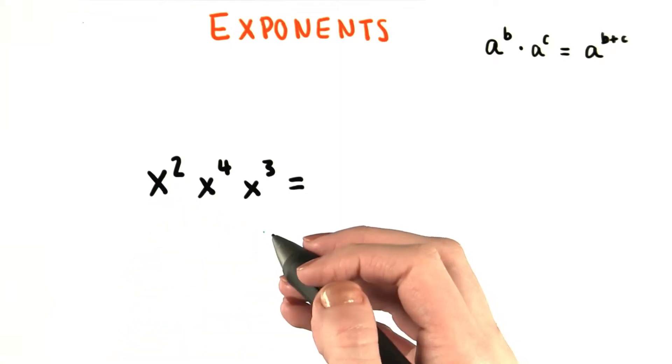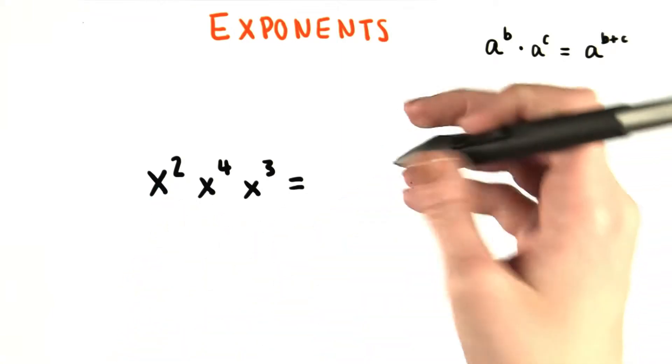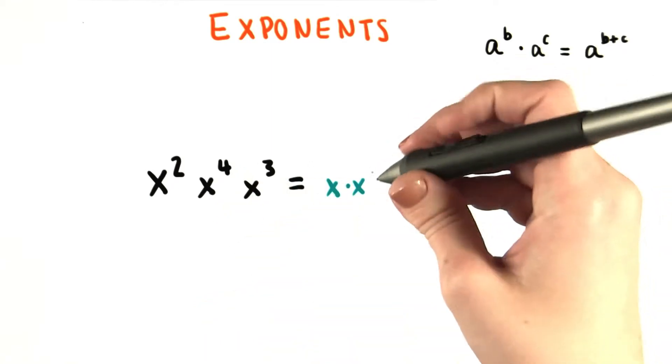Remember that x squared is just x times x, or two x's multiplied together. x to the fourth is just four x's multiplied together.